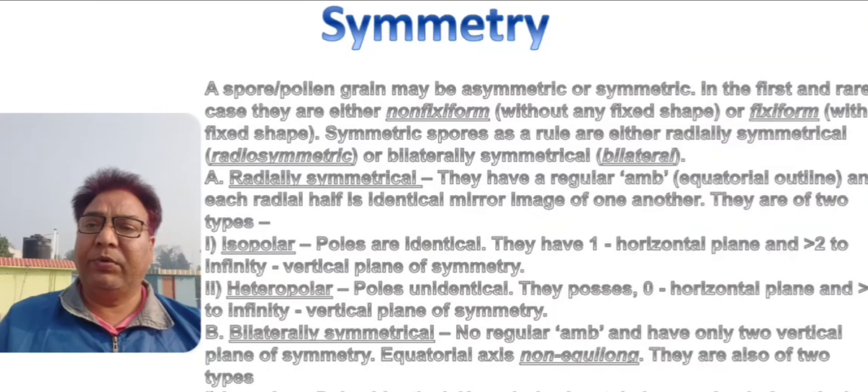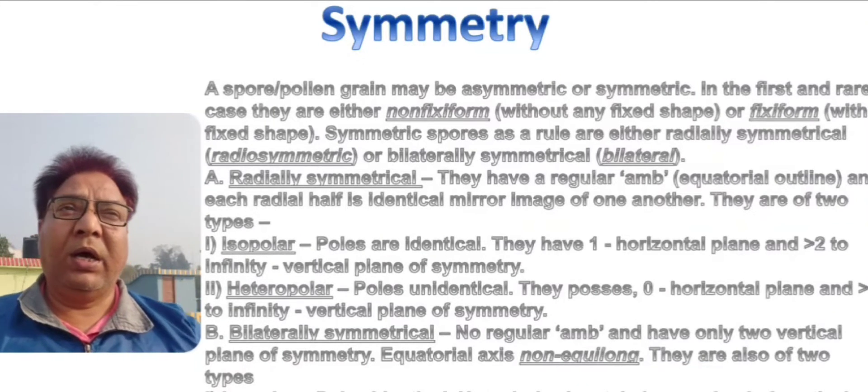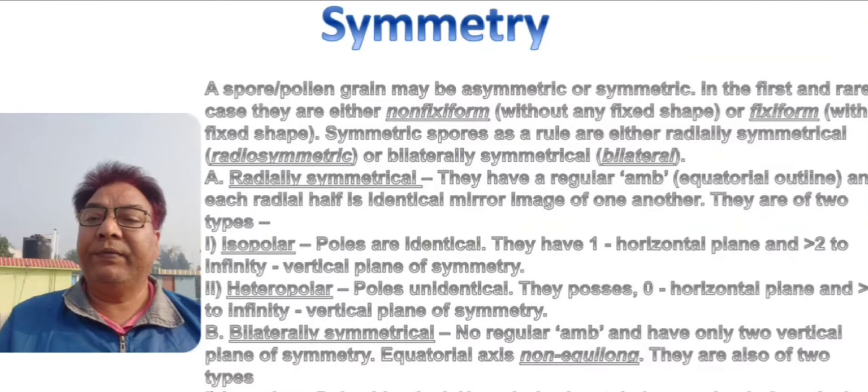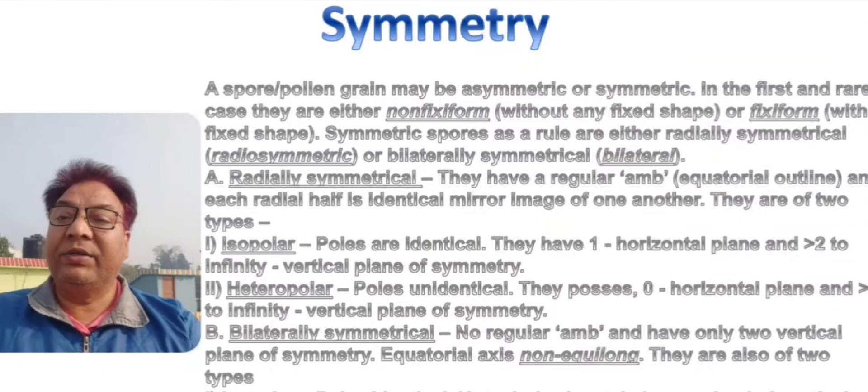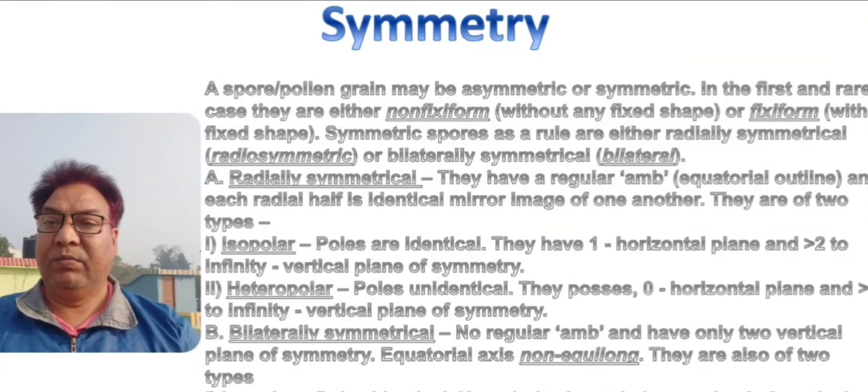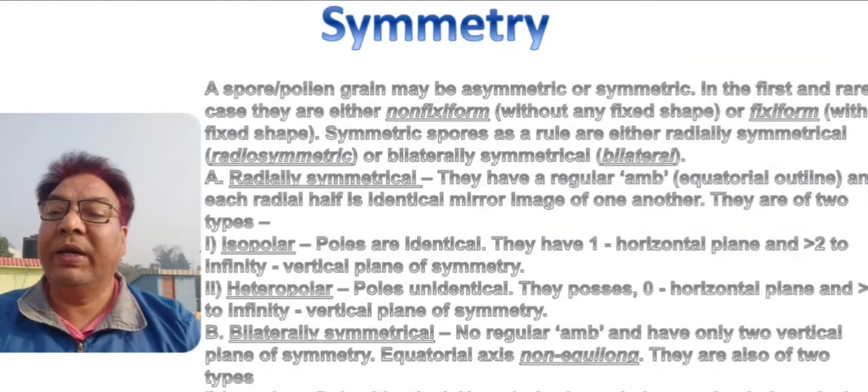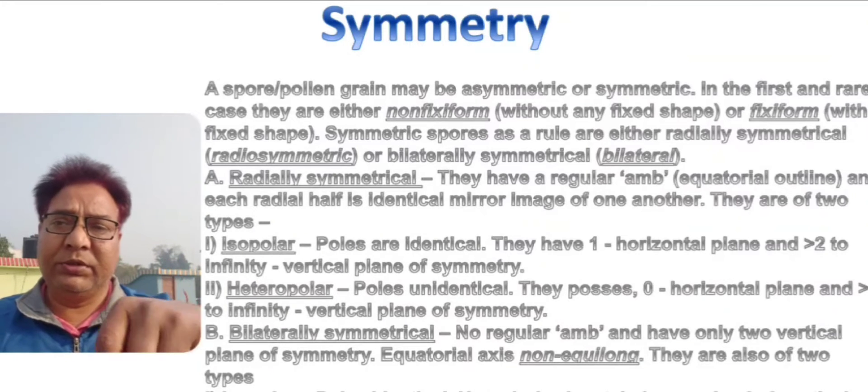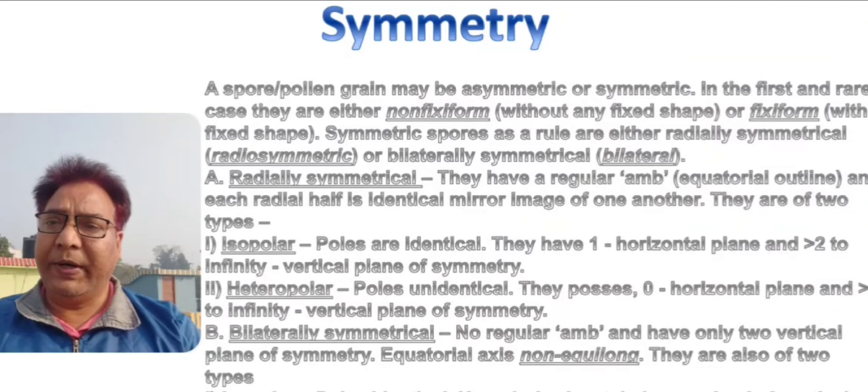In case of radial spores, when you are cutting through the longitudinal axis, through the polar axis, if the vertical plane of divisions are three to infinity, more than two to infinity, then the spore is of radial type. A triangular spore with a triangular amb is also a radial spore.